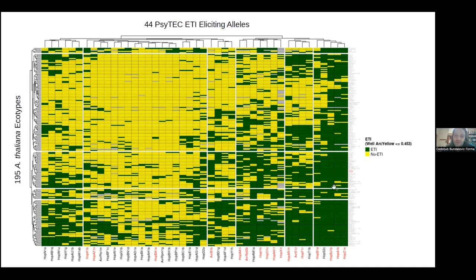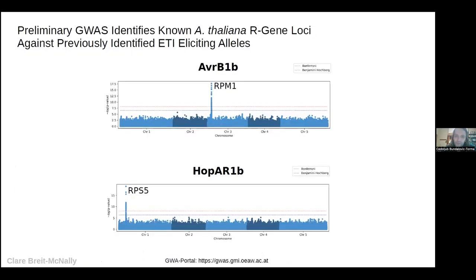The dichotomized results show different levels of conservation of immunity: three core immunoeliciting alleles are conserved across the Arabidopsis thaliana ecotypes, with more intermediate and low conservation alleles beyond that. We can also use this analysis to look for resistance gene loci through GWAS — preliminary analysis shows significant SNP hits to known resistance loci against two ETI-eliciting alleles, demonstrating that our data contains biologically informative insights. This ongoing work is being done by Claire.